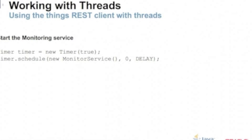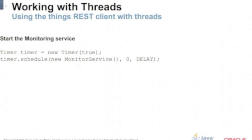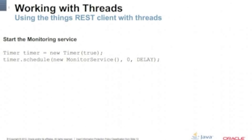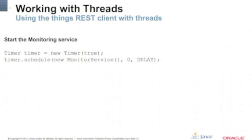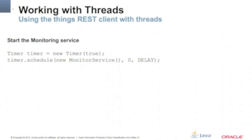Finally, when you have the timer task, you just create a timer, give it a daemon boolean value — so if you kill the application it doesn't keep running the thread — and you schedule it, beginning at zero delay with a timed delay. So you can run, for example, the humidity service every five seconds.